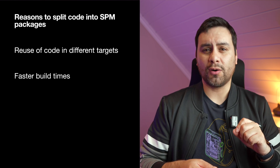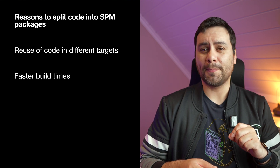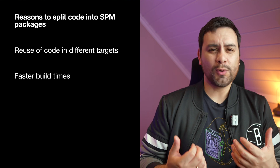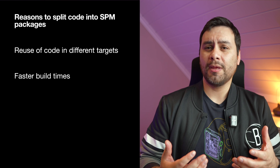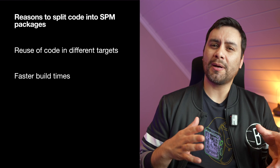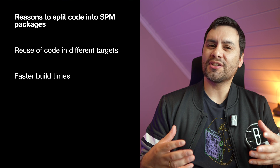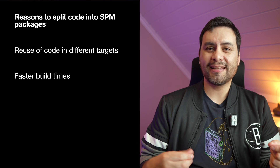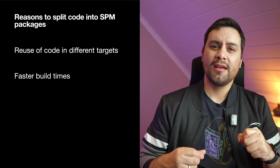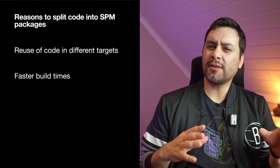The second reason to divide our code into SPM packages was faster build times. When working on changes to our design system, we don't need to compile the whole iOS app. When updating features in our large iOS app, Xcode previews take too long to update and become unusable for iterating on UI. On the other hand, when new features are developed in independent packages, we avoid those slow preview updates.